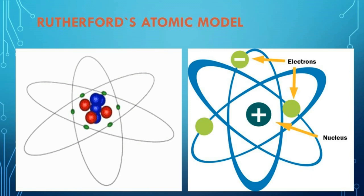Rutherford generalised his results and proposed the Rutherford atomic model. According to this model, the atom contains large empty space. There is a positively charged mass at the centre of the atom known as the nucleus. The size of the nucleus is very small compared to the size of the atom. The electrons revolve around the nucleus in closed circular paths called orbits. An atom as a whole is electrically neutral. The number of protons and electrons in an atom are equal.